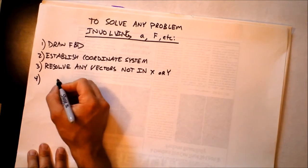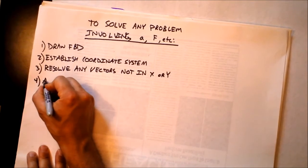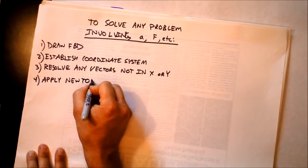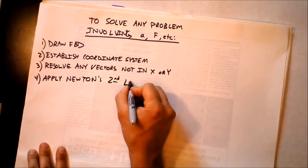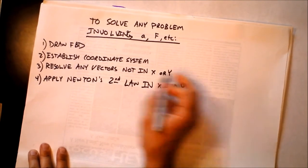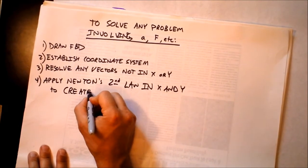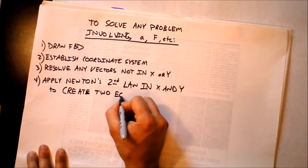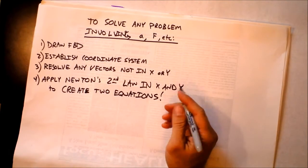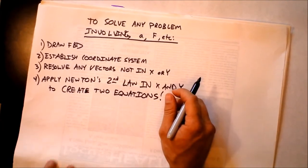And the fourth step is the most important step, and this is where a lot of students draw a blank. You've done this, and this is kind of automatic. Then you need to apply Newton's second law in x and y to create two equations. That's the most fun step because you're actually creating the physics of the problem by applying Newton's second law. F is ma.